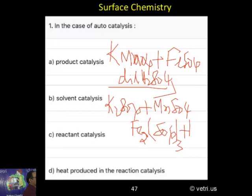These are the reactions. What is happening here? The manganese sulfate that is formed initially, that manganese ion is acting as a catalyst. This is called product catalyst.